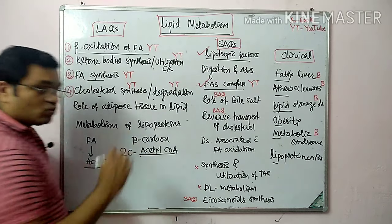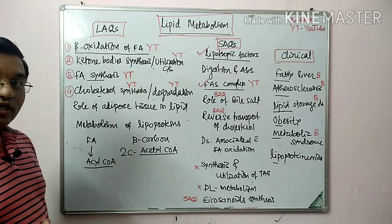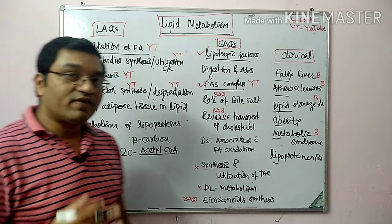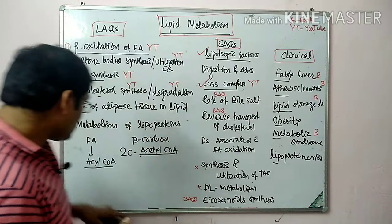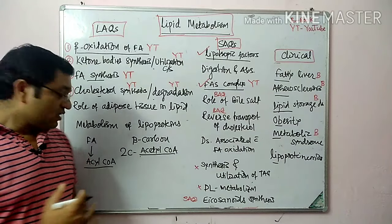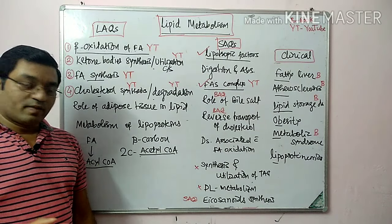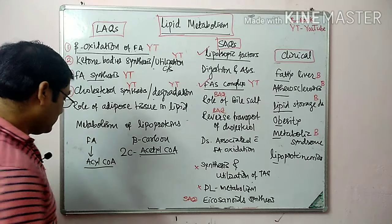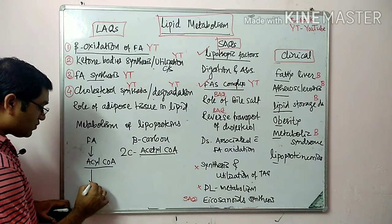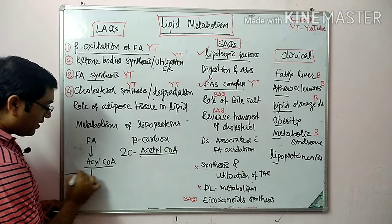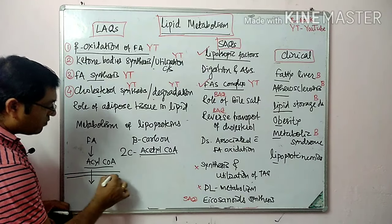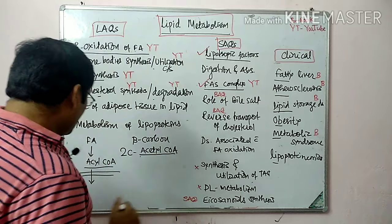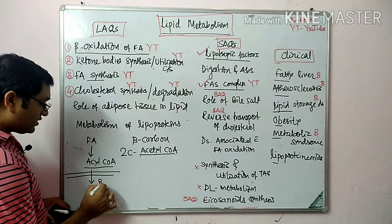There is a difference between acetyl coenzyme A and acyl coenzyme A. Acetyl means it has two carbons; any fatty acid with more than two carbons is known as acyl coenzyme A. This step is known as activation of fatty acid. The second step is transport across the mitochondrial membrane with the help of the carnitine shuttle system.